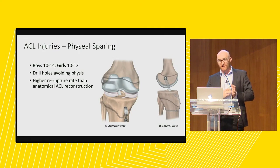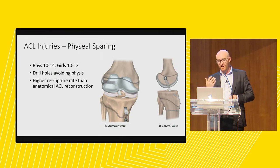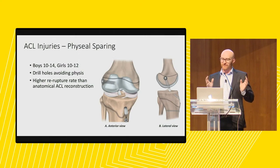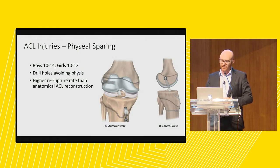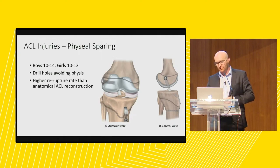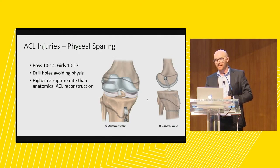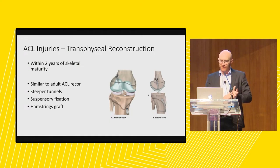Physeal sparing surgery has increased in popularity, mostly because our equipment is much better. We can now drill targets under x-ray guidance with surgical tools that allow us to stay away from the physis, particularly on the femoral side, which causes the most problems. For boys 10–14 and girls 10–12 as a rough guide, we can do a physeal sparing or all-epiphyseal ACL reconstruction that doesn't cross the femoral or tibial physis. There's a higher re-rupture rate than anatomic reconstruction, but we must accept that to avoid angular limb deformity.